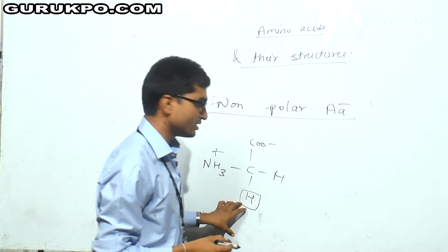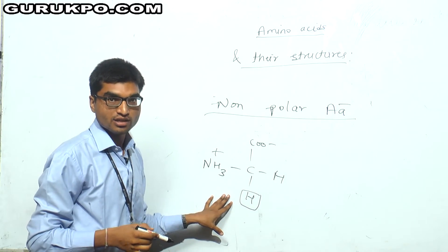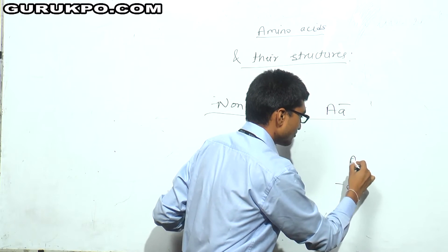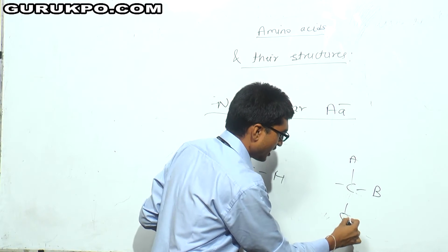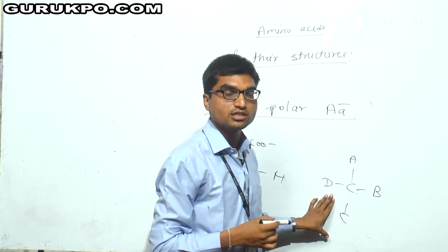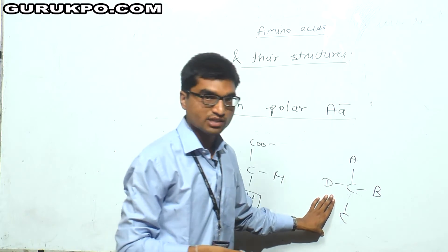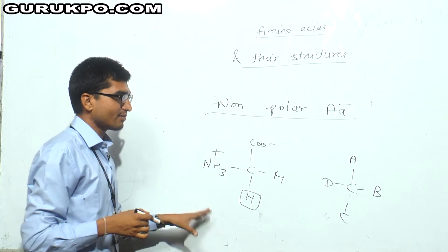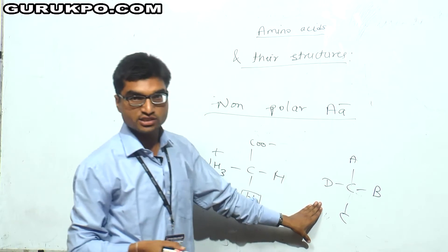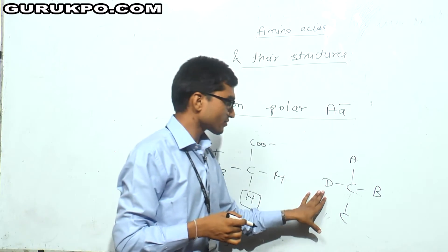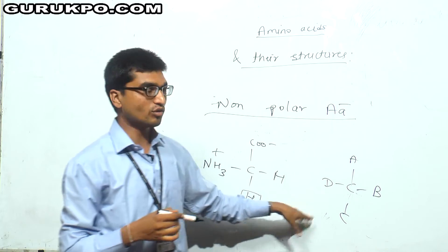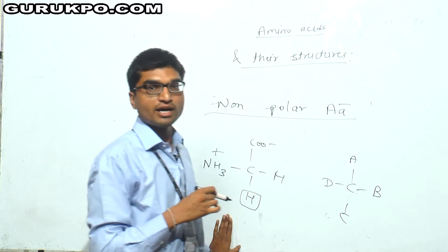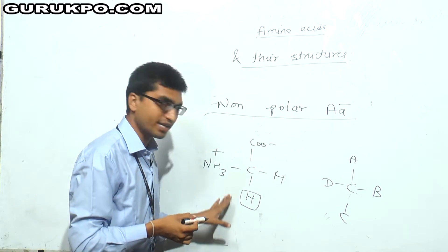Glycine is not a chiral molecule. Chiral carbon is when four different groups are attached to a particular carbon — that carbon is known as chiral carbon, also known as asymmetric carbon. This carbon is responsible for conformational isomers. Glycine won't be having any type of optical isomer.